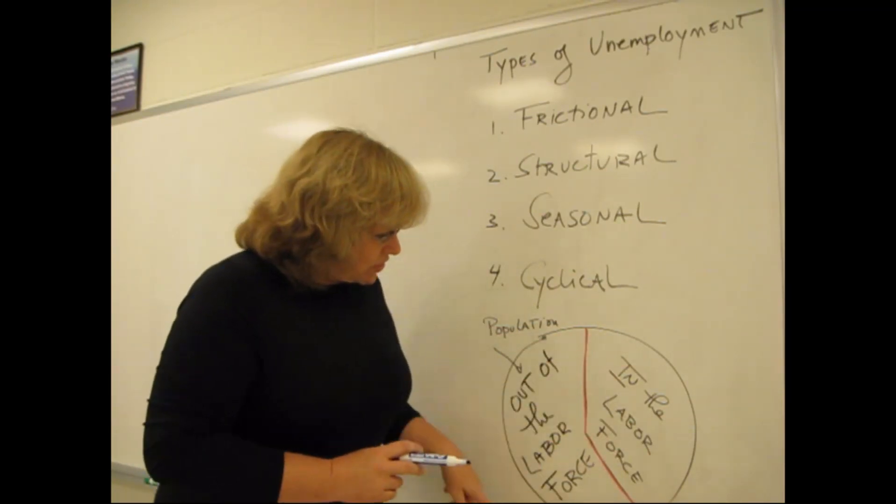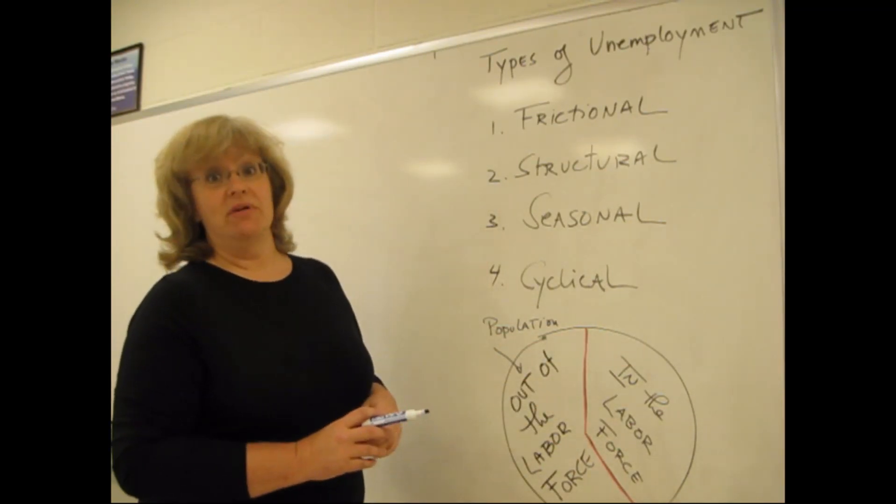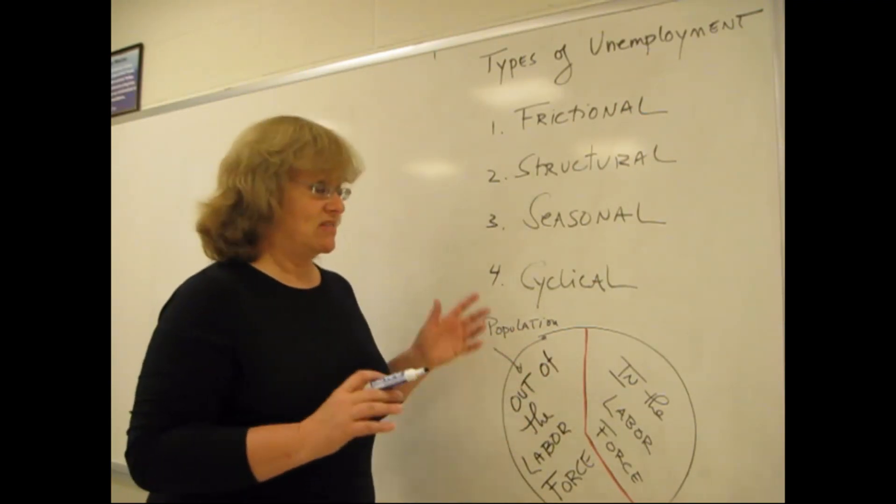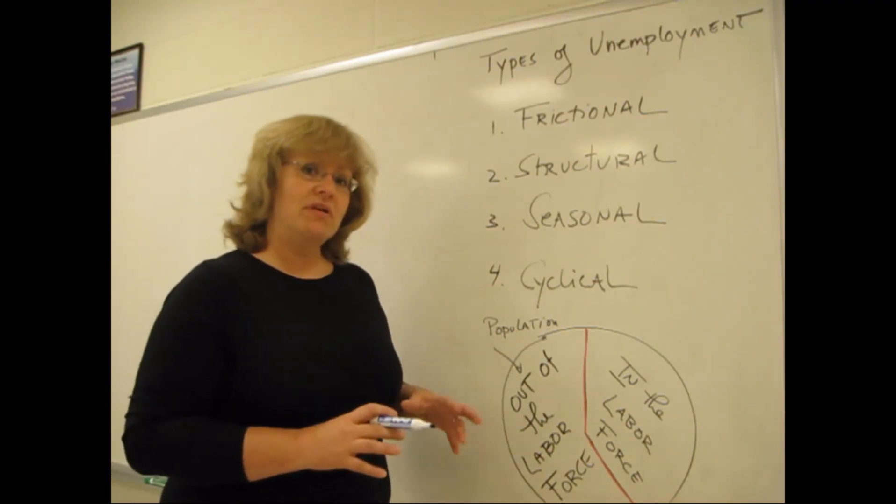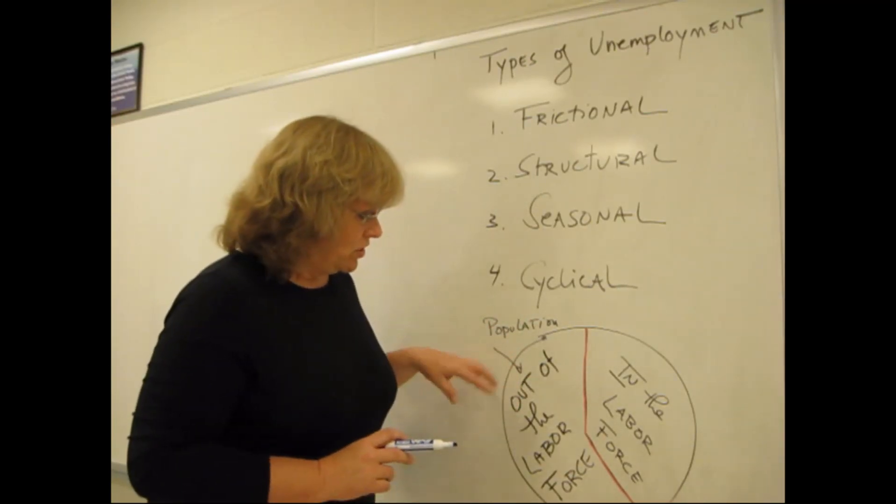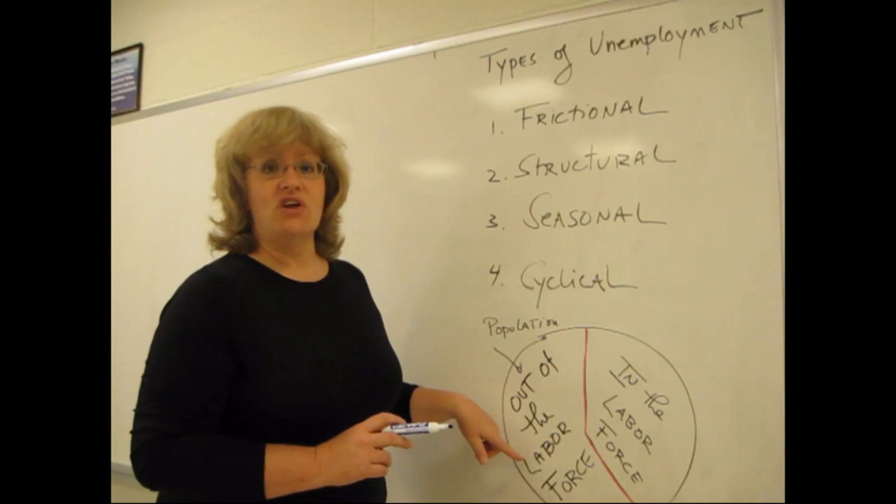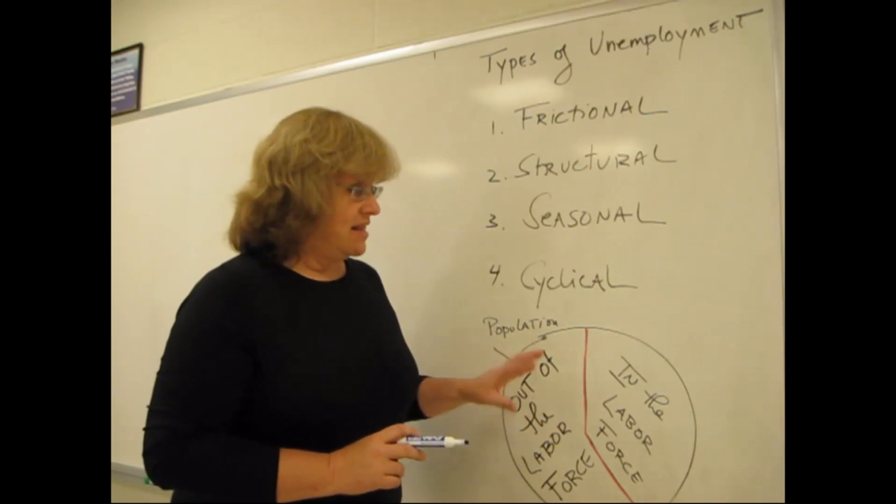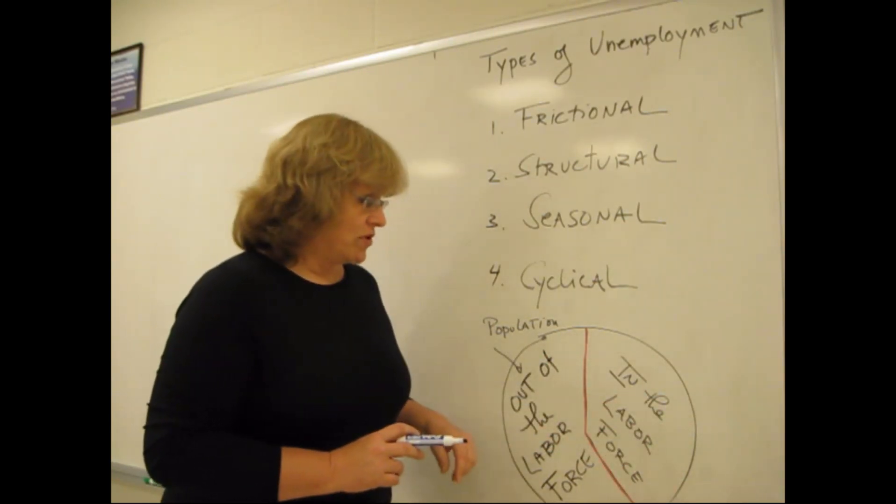The big circle I've got drawn here represents the population. It could be the United States, it could be Great Britain, it could be Mexico, whatever. The population at one level is really divided into two different groups of people. One are those folks that are out of the labor force. The other, those folks that are in the labor force.